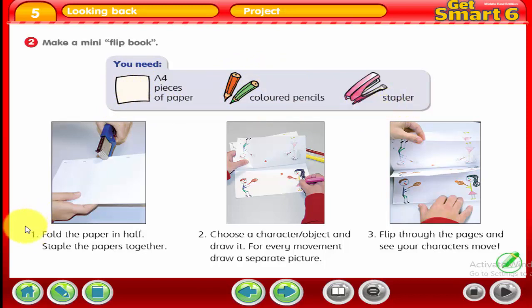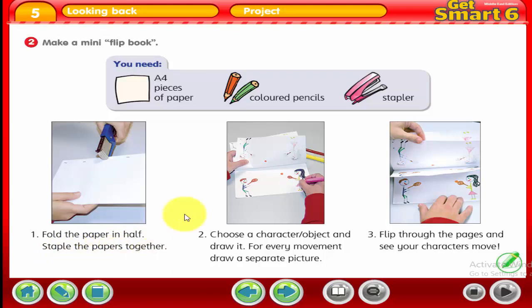Step number one: fold the paper in half, then staple the papers together. Step number two: choose a character or object and draw it. For every movement, draw a separate picture.